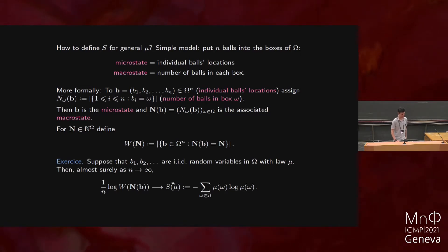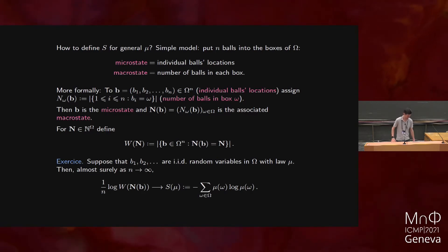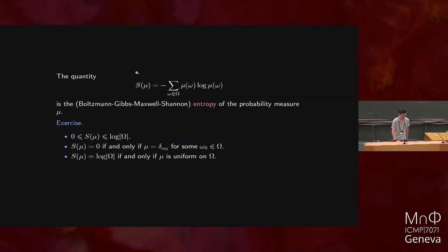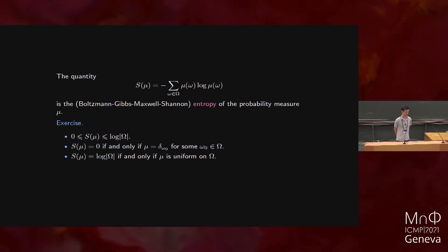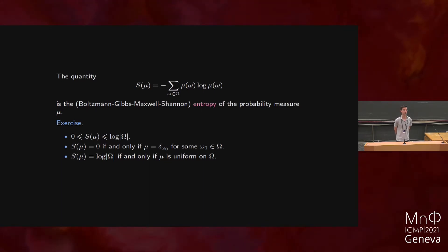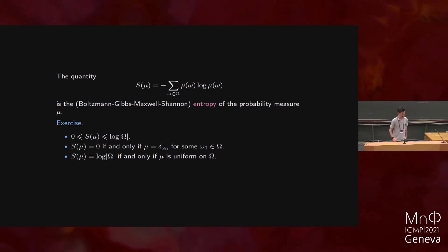This quantity is what is usually referred to as the entropy. It's a very beautiful and general object appearing in many areas of mathematics and physics. It bears the names of Boltzmann, Gibbs, and Maxwell in statistical mechanics. Later in the 1950s, it was behind a revolution in information theory initiated by Shannon — it also measures the information content of the measure mu — and it has a number of very cute properties you can work out as an exercise.